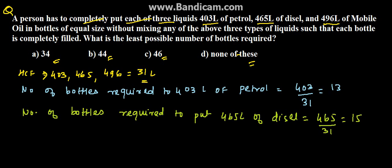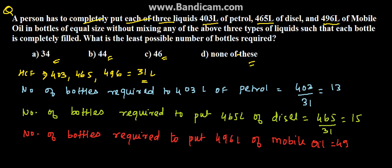And the last is the number of bottles required to put 496 liters of mobile oil, which comes to 496 upon 31, which is 16.